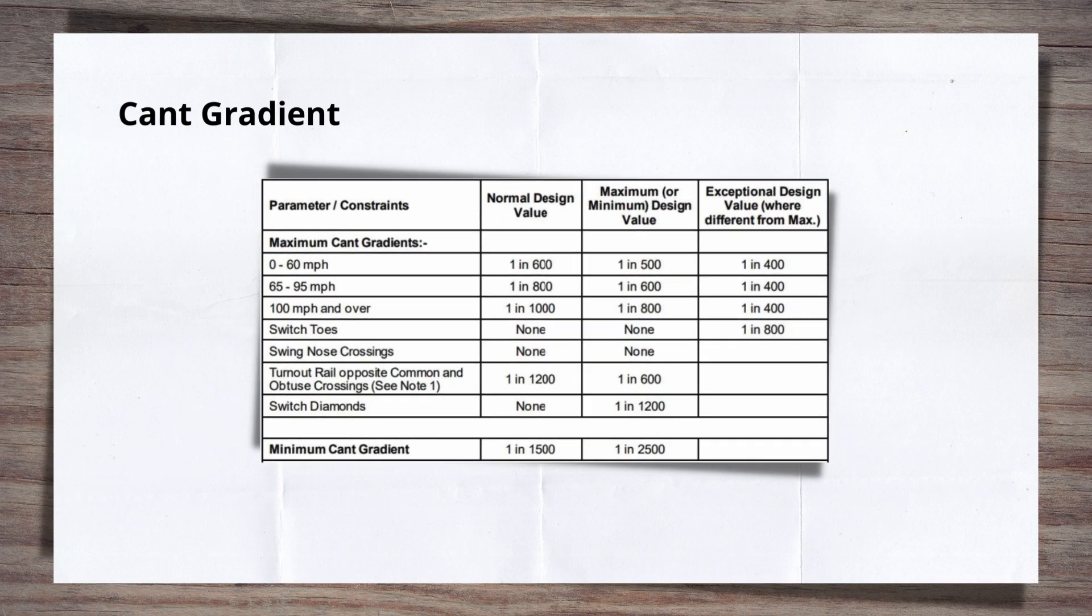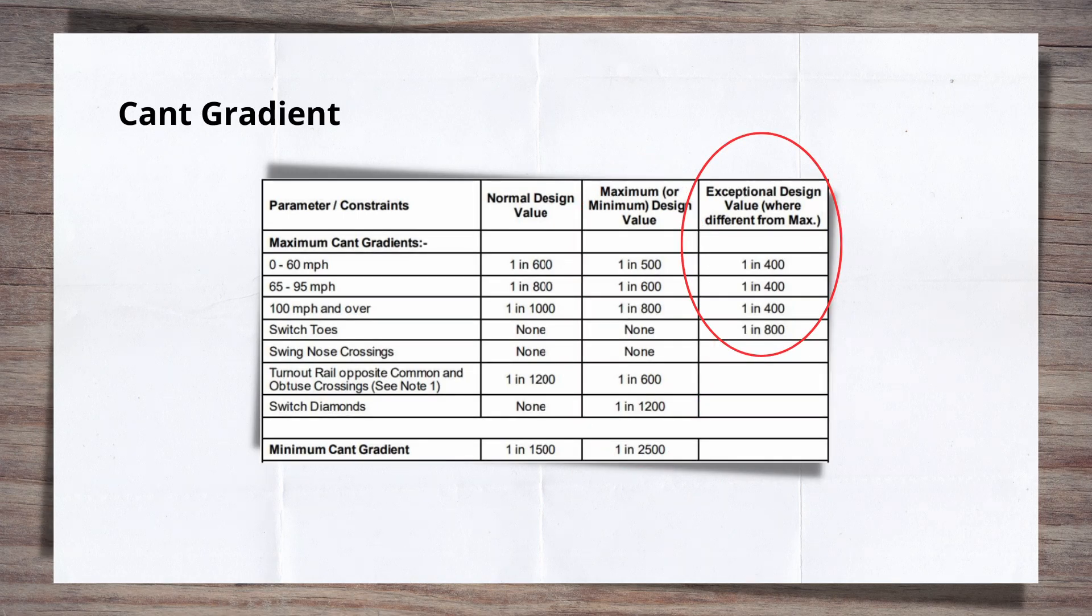In the UK, cant gradient design limits are determined by brackets of speed. There is also the normal limit, where designers should aim for, the maximum limit which can be used if required, and the exceptional limit that needs special dispensation to utilize.